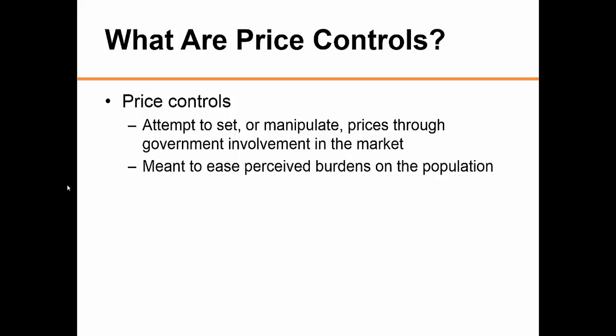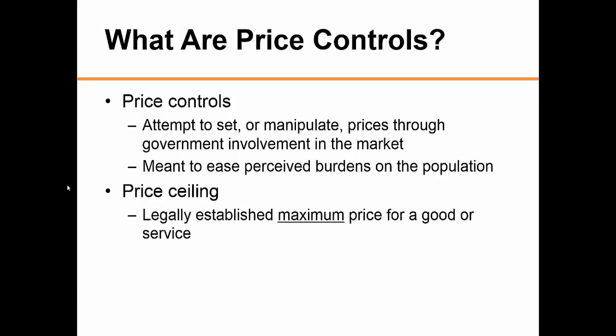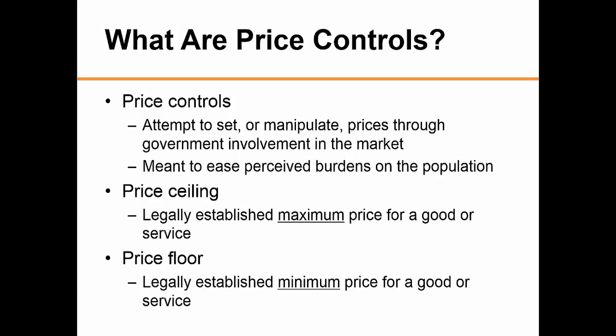There are mainly two different ways price can be controlled. The first is a price ceiling, which is a legally established maximum price for a good or service. An example of a price ceiling is rent control, where government puts a limit on the rent that can be charged to tenants in order to help them pay lower rents. The second is a price floor, which is a legally established minimum price for a good or service. An example of a price floor is the minimum wage, a wage set by government high enough that consumers can afford a living.